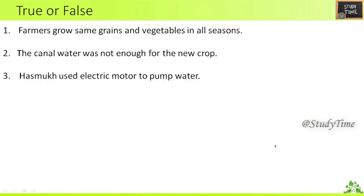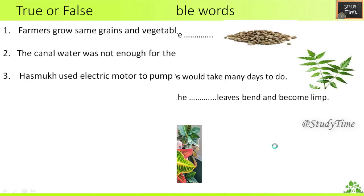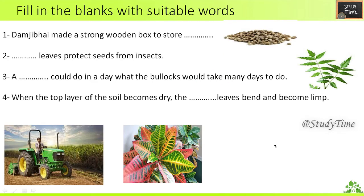True or False: First question — farmers grow the same grains and vegetables in all three seasons. That is false. Second question — the canal water was not enough for the new crop. That is true. Third question — Hasmuk used an electric motor to pump water. That is true.